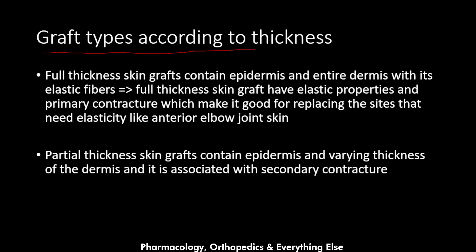According to thickness, we have full thickness skin grafts and partial thickness skin grafts. The full thickness graft contains the epidermis and the entire dermis with its elastic fibers. Full thickness skin grafts have elastic properties and primary contracture, making them good for replacing sites that need elasticity, such as the skin over the anterior elbow joint, as more elastic fibers in the dermis make the graft more mobile.